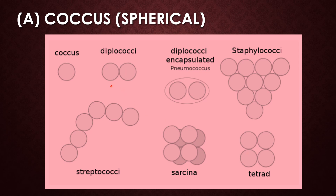The diplococci represents an arrangement of two cocci — that is, a pair of cocci is represented as diplococci. A pair of cocci surrounded by a capsule is represented as diplococci encapsulated. A cluster of cocci is referred to as staphylococcus. Cocci arranged in the form of a chain is called streptococci. Arrangement of four cocci is referred to as tetrad, and arrangement of eight cocci is referred to as sarcina.